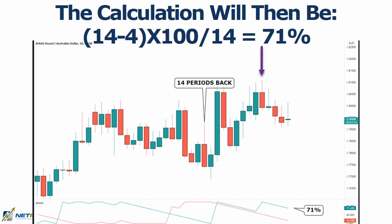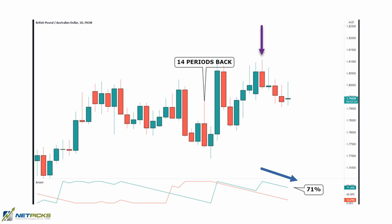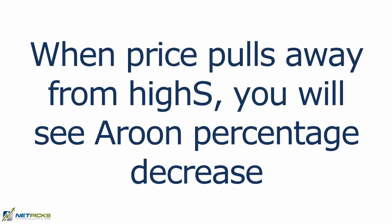Basically what you do is determine the strength of the trend by comparing the current reading — 71% — to the readings in the past. In this example we can see the Aroon Up, that's the green line, moving downward, showing a decrease in bullish strength. When price was at the highs before this move down, the indicator showed extreme strength of 100%. Essentially you're looking at how long it's been since a new high was made during that 14-period look-back, so when price pulls away from a high the Aroon percentage decreases.